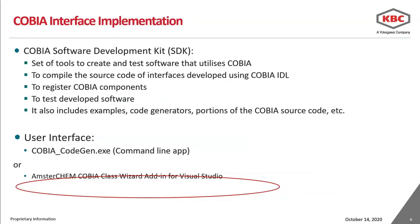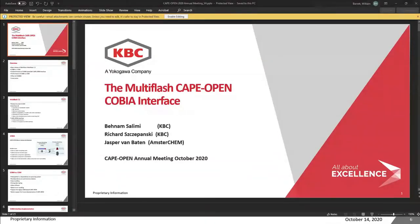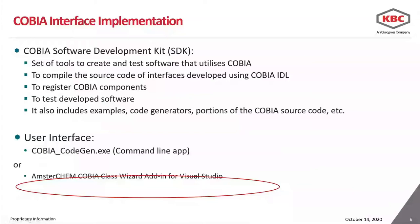To implement the COBIA interface, we used the COBIA SDK — the Software Development Kit — which is a set of components and tools to create and test software that utilizes COBIA. The COBIA SDK includes tools to compile the source code of interfaces developed using the COBIA interface IDL. It can also be used to register COBIA components and test developed software. It includes examples, code generators, portions of the COBIA source code, and more. There were two ways of implementing the COBIA interface: either using the COBIA command line code generator, or, if you use Visual Studio, the Amsterdam COBIA class wizard add-in — which was the approach we used.